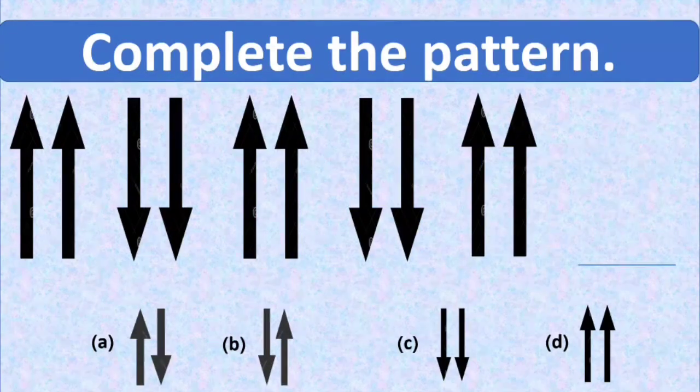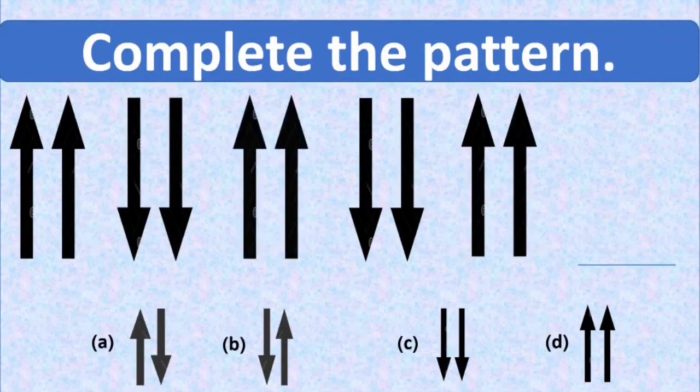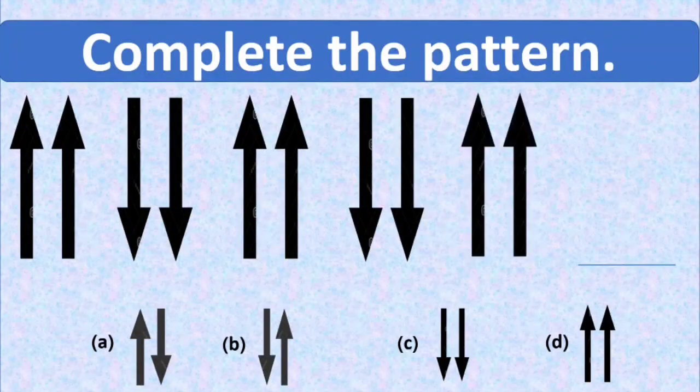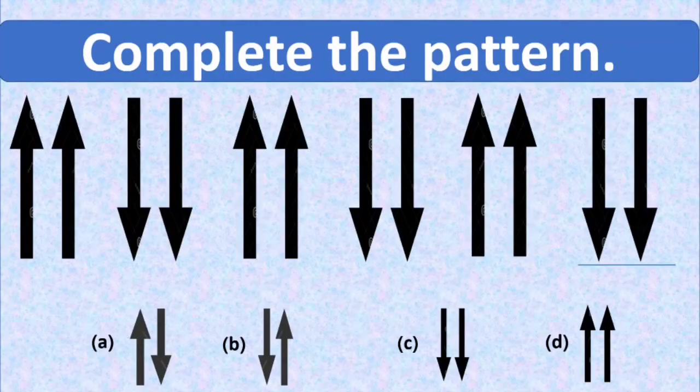You can see the first two arrows are placed in an upward direction. Then the two arrows are downward. The next two arrows are upward. The next two arrows are again downward. And then again, the two arrows are upward. Now it's turn for two arrows that will be placed downwards. So option C is the right option, and it will complete the pattern correctly. It is the correct option.